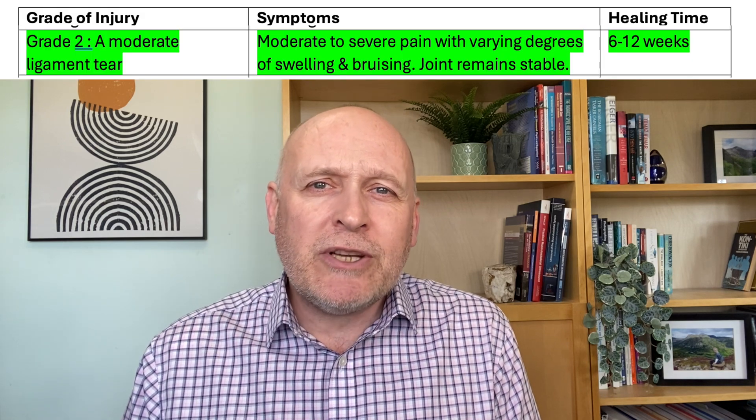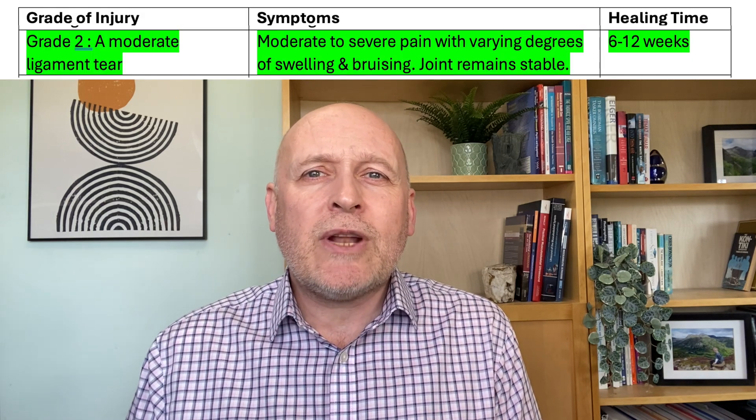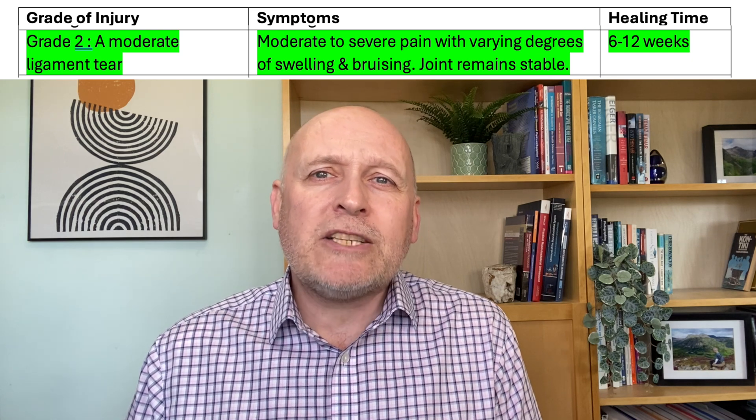Moving onto Grade 2 ligament injuries, which is our moderate tear. There's usually going to be some swelling and bruising with these injuries, and so an anti-inflammatory regime can be helpful, especially during those first few days. The RICE acronym is often recommended here: REST from painful activities, ICE — an ice pack applied for 20 minutes every few hours to keep the swelling down — COMPRESSION using a bandage or neoprene support to contain any swelling, and finally ELEVATION, keeping the affected joint elevated, preferably above the level of your heart, which can help prevent swelling from tracking downwards due to gravity.